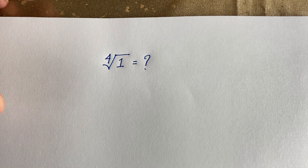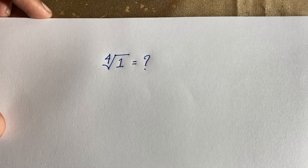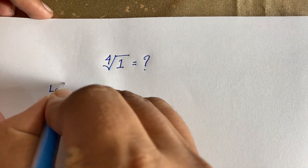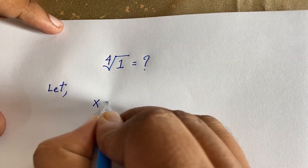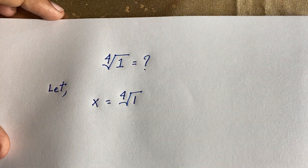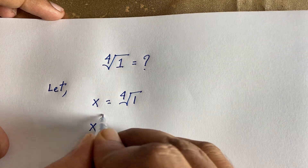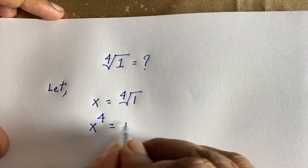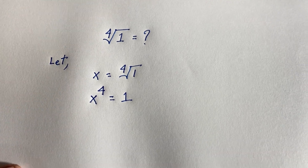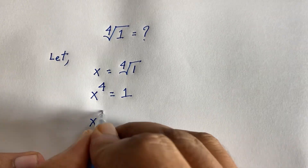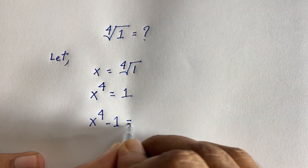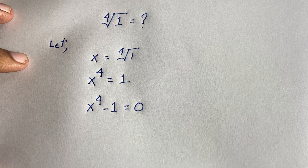4th root of 1 is equal to what? To solve this, we let x equal the 4th root of 1. Raising both sides to the power of 4 gives x to the power 4 is equal to 1. Moving the 1 to the other side gives x to the power 4 minus 1 is equal to 0.